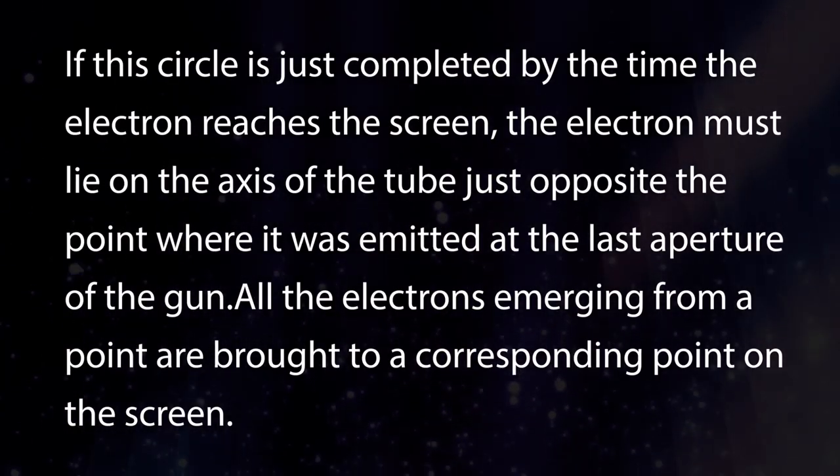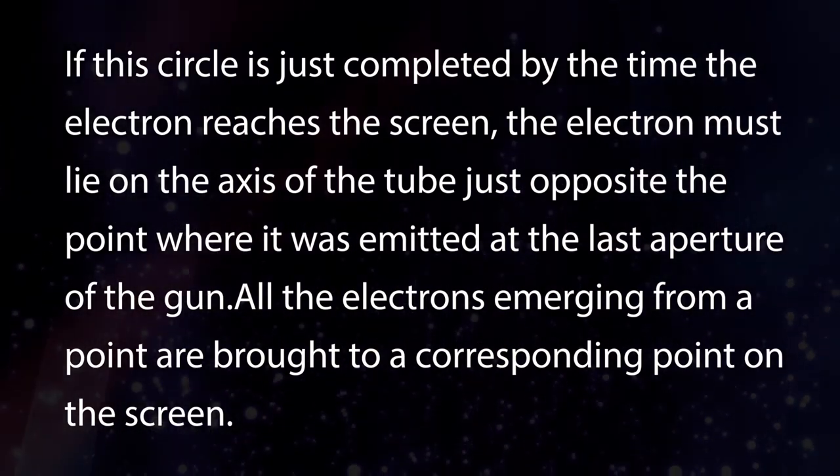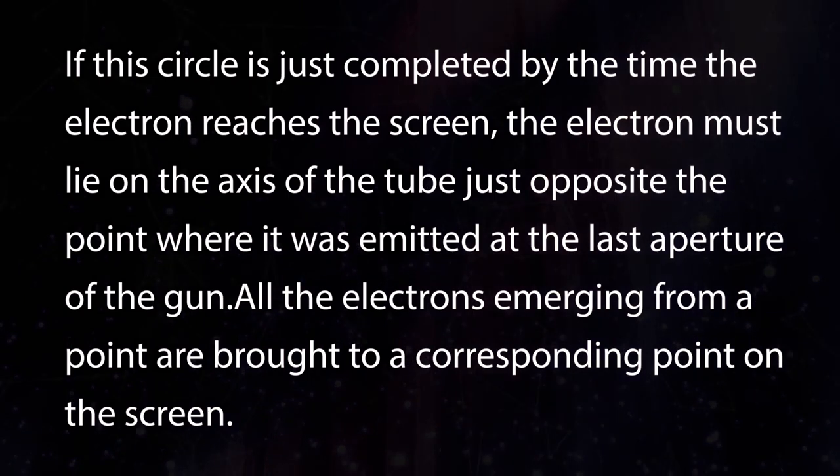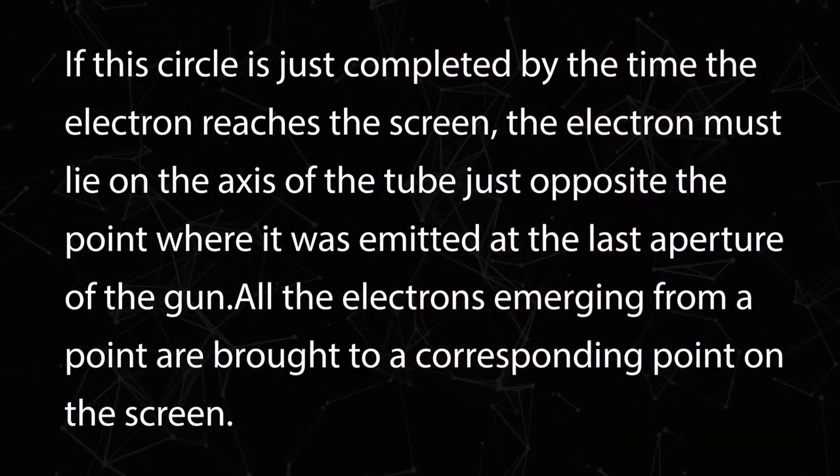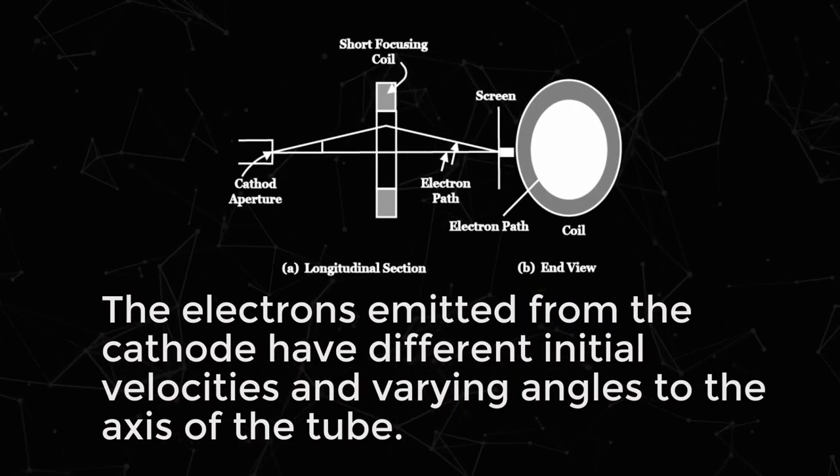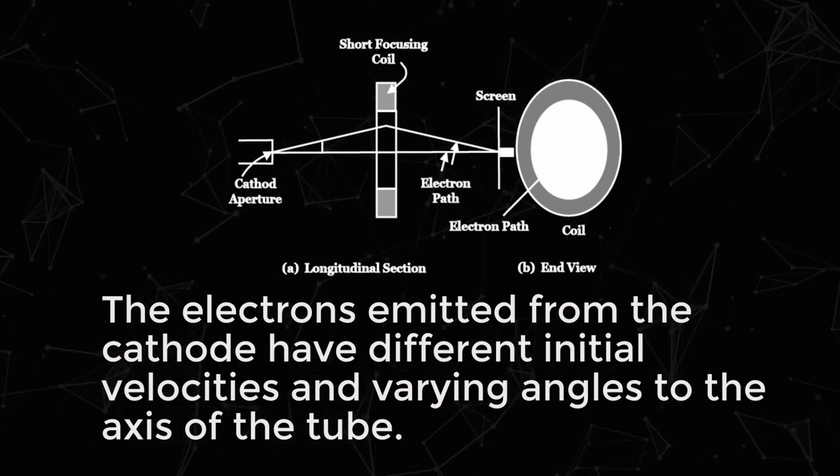If the circle is just completed by the time the electron reaches the screen, the electron must lie on the axis of the tube just opposite the point where it is emitted at the last aperture of the gun. All the electrons emerging from a point are brought to a corresponding point on the screen. In general, the electrons emitted from the cathode have different initial velocities and varying angles to the axis of the tube.